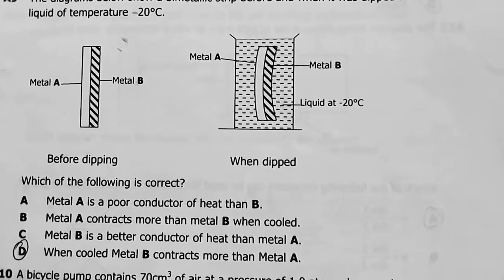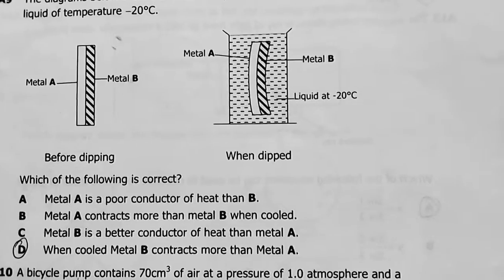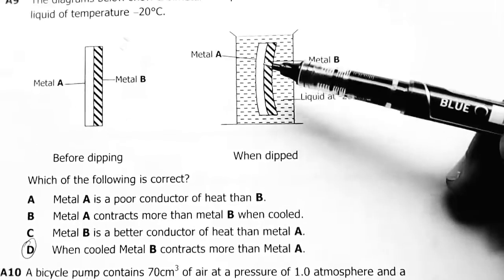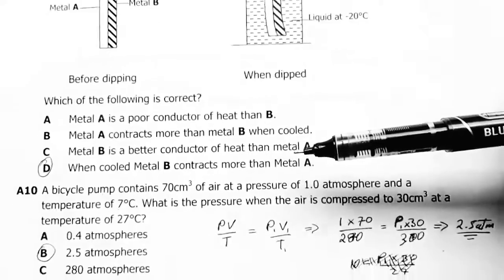Which of the following is correct? My answer was D: when cooled, metal B contracts more than A. That's the only sensible answer here which is approaching this question correctly. The others are twisted to make you confused. This is unfair.